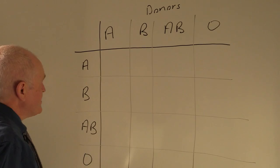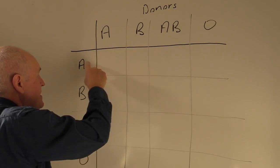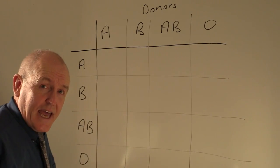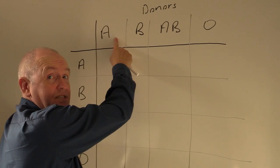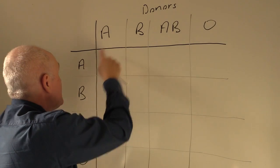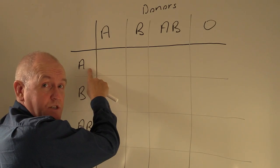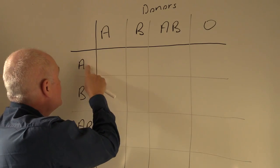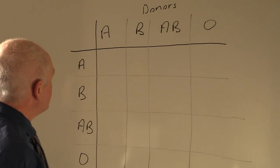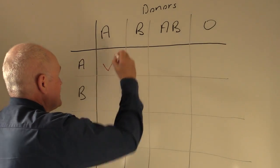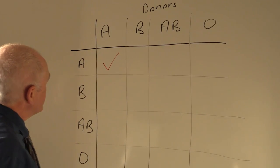Well, let's imagine the situation where A is giving to A. This person is going to be giving A antigens, but in the plasma of the A recipient there are not going to be any A antibodies to agglutinate the donated red cells. Therefore that is going to be acceptable, just thinking about the ABO system.